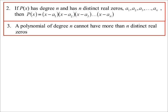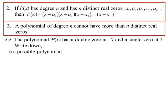Some of those might be the same, because you can have double roots or double zeros and so on. Here's one where we're saying it has a double zero at negative 7. So that means the factor x plus 7 appears twice—x plus 7 squared—and a single at 2. Write down a possible polynomial.